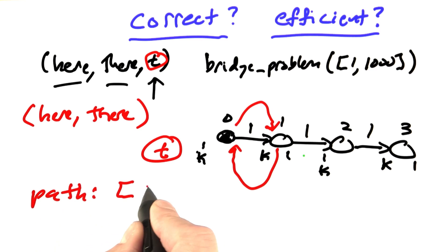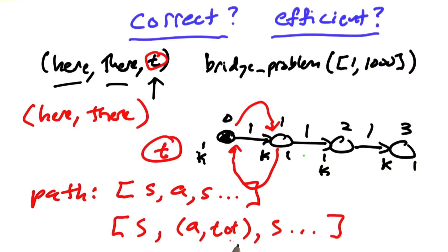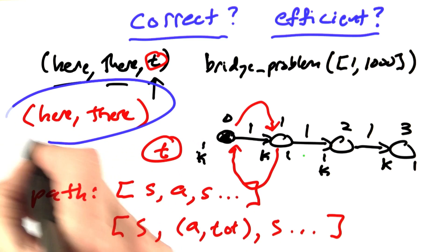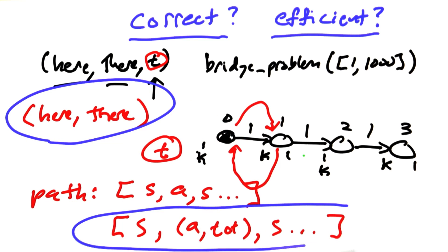We have a path which is state, action, state, and so on. It keeps on alternating between states and actions. Let's change that so that the path is a state followed by a tuple of the action and the total time it took after applying that action, then the next state, then the next action and the total time after applying that, and so on. That will be our new representation. States are going to look like that, and paths are going to look like that.